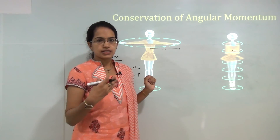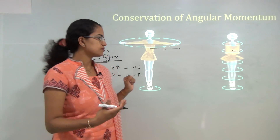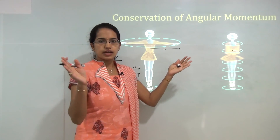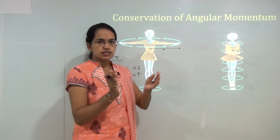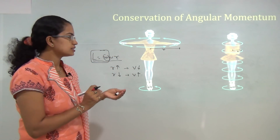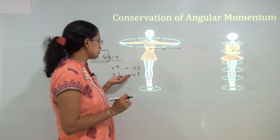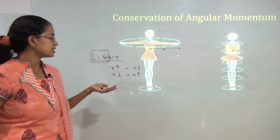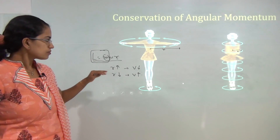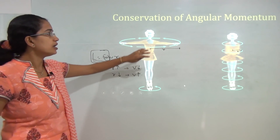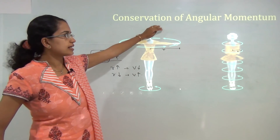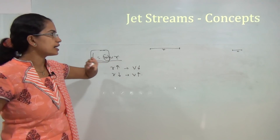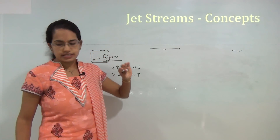Similarly this happens with jet streams. When we understand the formation of jet streams we will see how the radius of the jet stream decreases, and once the radius decreases the velocity of the jet stream increases. Therefore understanding conservation of angular momentum is very important to understand jet streams.